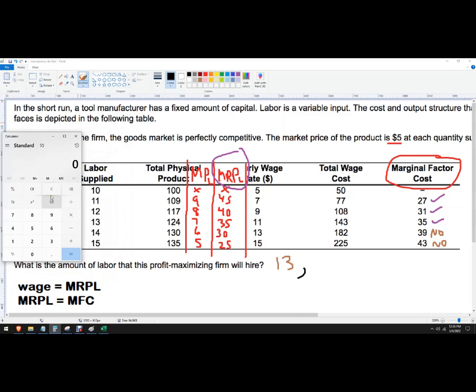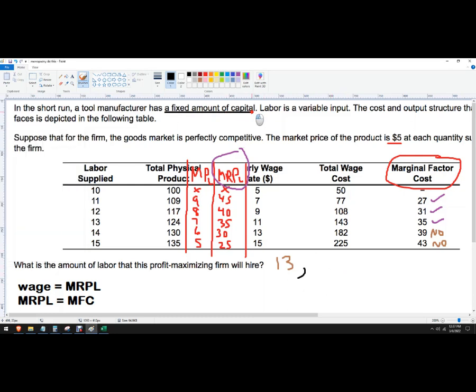So if I hire 13 workers, I'm going to get 124 units times 5, so that's 620. And then I'm going to pay 143 in total wage cost, so this is a profitable enterprise. So 620 minus 143 would be 477 for profit, and then I could figure out whatever the fixed costs are to figure out my total profit. There you go.